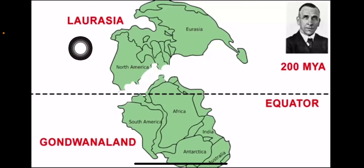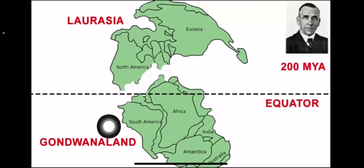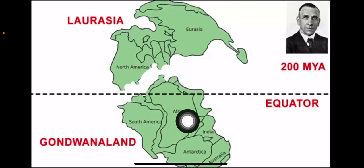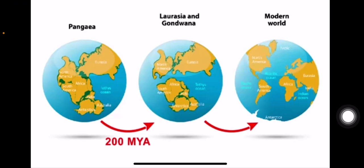The northern part is Laurasia, which includes North America and Eurasia. The southern part is Gondwana, which includes India, South America, Africa, and Antarctica. So Pangea was made up of these two parts: Laurasia and Gondwana.